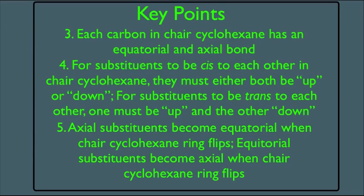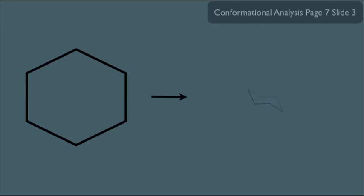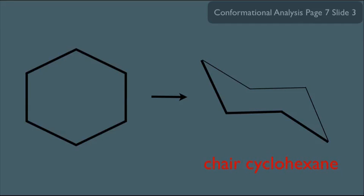So let's understand these principles. Here is just a simple two-dimensional picture of cyclohexane — a simple six-carbon ring, and this is one way to represent it. However, this is not the reality. Cyclohexane does not look like this structure. What it actually adopts most of the time is this structure right here.